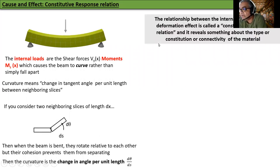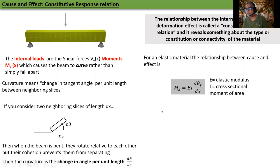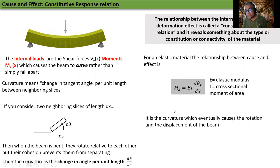The relationship between internal cause and local deformation effect is called a constitutive relation, and it reveals something about the type or constitution or connectivity of the material. For an elastic material, the relationship between cause and effect is MZ equals EI d theta Z dx. E is the elastic modulus. I is the cross-sectional moment of inertia. You must have seen this from your elementary strength of materials class. It is the curvature which eventually causes the rotation and displacement of the beam.